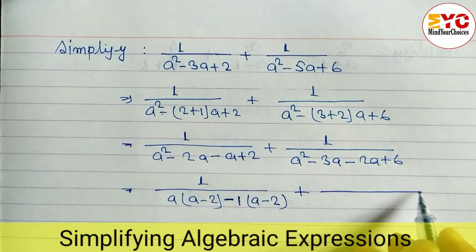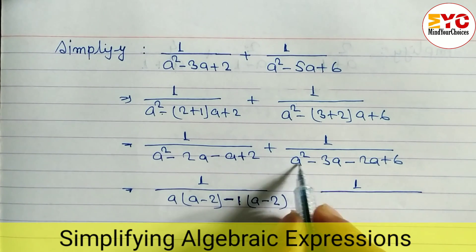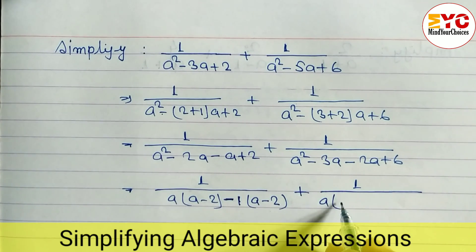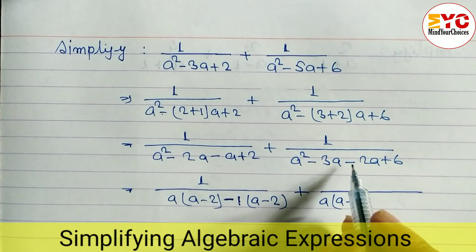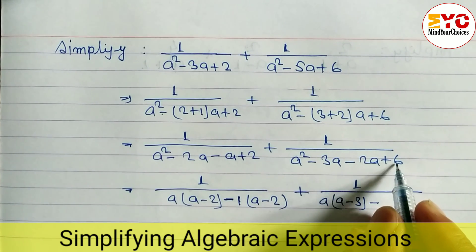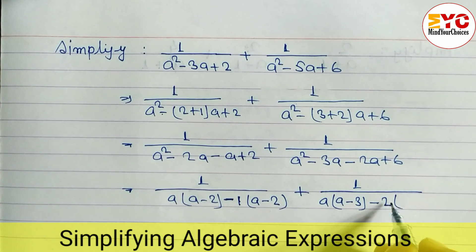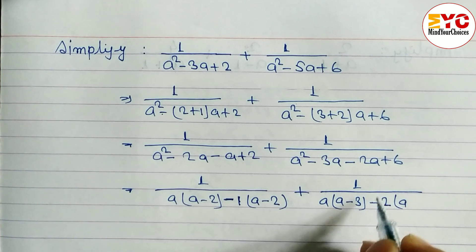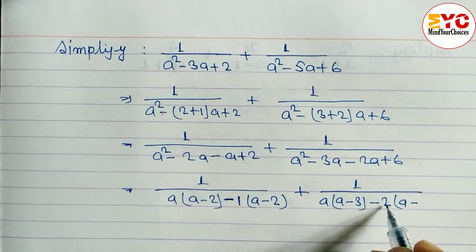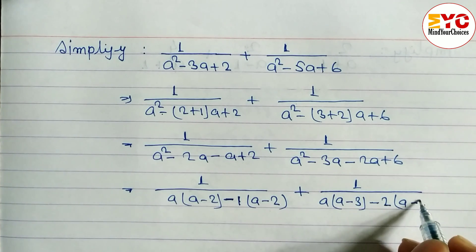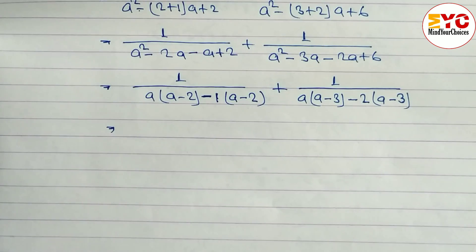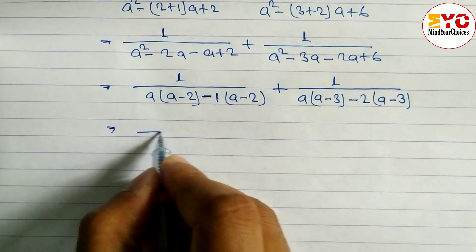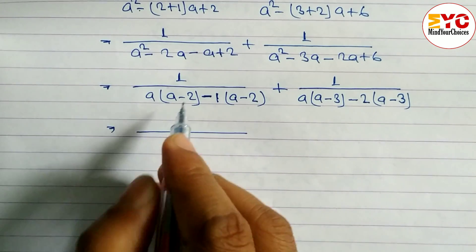For the second expression, from the first two terms take common a, leaving a-3. From the last two terms, we take common 2, and remaining is a-3. When minus is common, in place of plus we write minus, so 6 divided by 2 gives 3, leaving a-3.